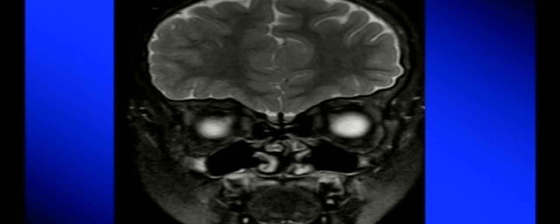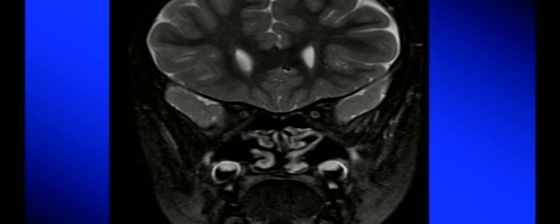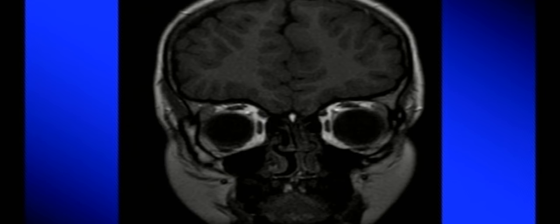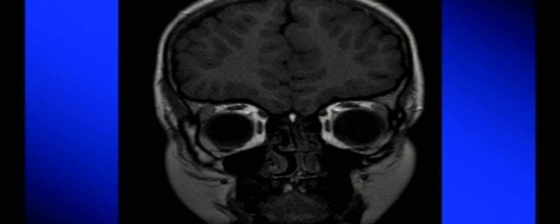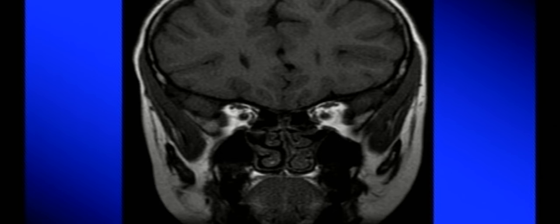Moving posteriorly on coronal sections, the eyeball disappears and we start seeing the optic nerve — surrounded by hyperintense signal because the meninges surrounding the optic nerve contain CSF, which is fluid and therefore hyperintense on T2. On T1 coronal sections, the vitreous is dark and the orbital fat and muscles are well identified. On T2 images the vitreous is bright.